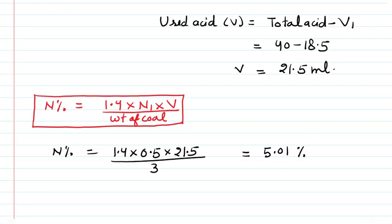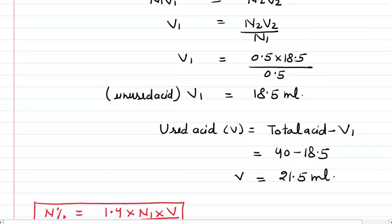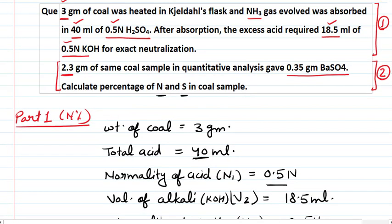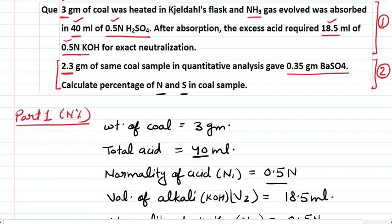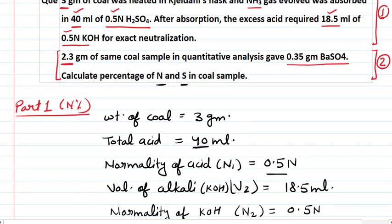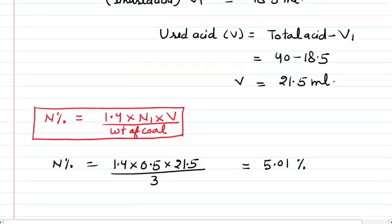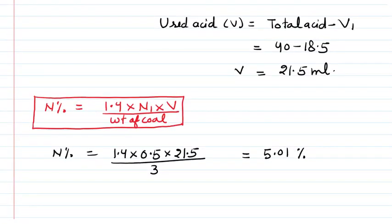After calculating the percentage of nitrogen, we move to the second part of the numerical where we calculate the percentage of sulfur. For that, we are given 2.3 grams of coal sample and 0.35 grams of barium sulfate. Using these two given values we will calculate the sulfur percentage.